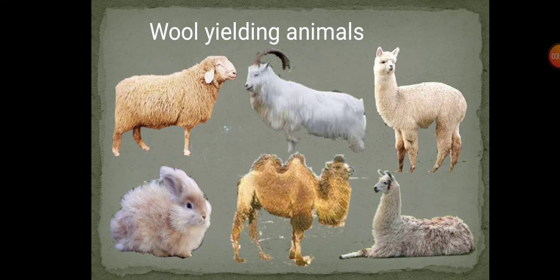The angora rabbit also produces a kind of wool that is of very fine quality and is very expensive, because the rabbit is very small so each rabbit produces a very small amount of wool. Another animal named chiru, found in Tibet, is also used to get a very fine quality of wool, called the king of fine wool. To obtain this, chiru are hunted and killed since their hairs are very delicate. As a result, the population of chiru has decreased, so to stop their hunting, the government has banned the use and selling of shawls made from shahtoosh.